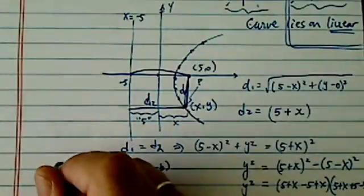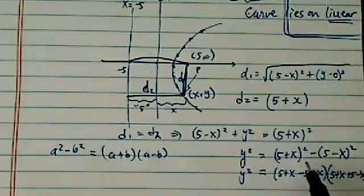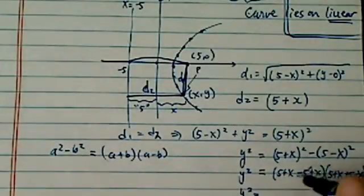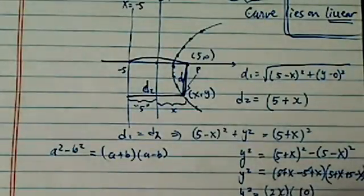All I did is instead of opening it up, I used difference of squares here. So then I have y² is equal to 2x times, this cancels out, this is 10. So y² is equal to 20x.